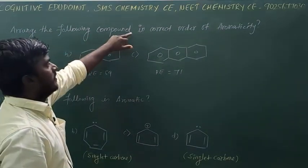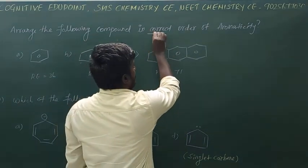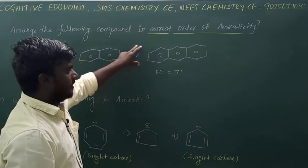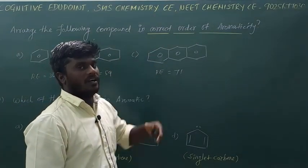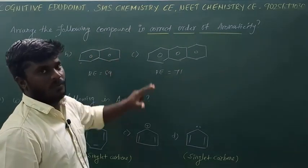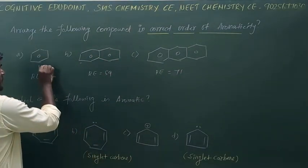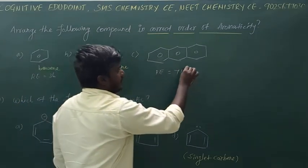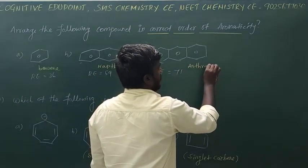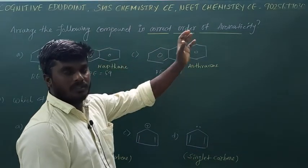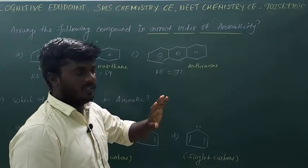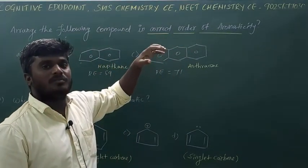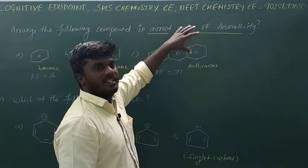The following component is the correct order of aromatic chemistry. The aromatic components include benzene, naphthalene, and anthracene. Which one is more aromatic? The aromatic chemistry comparison is the same.